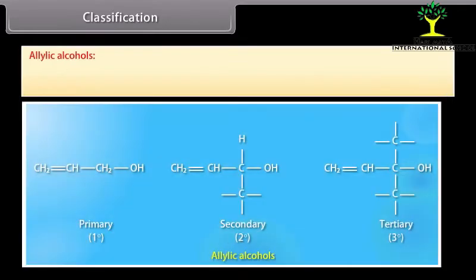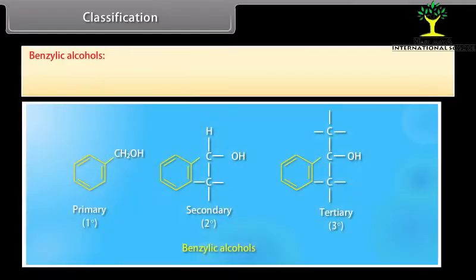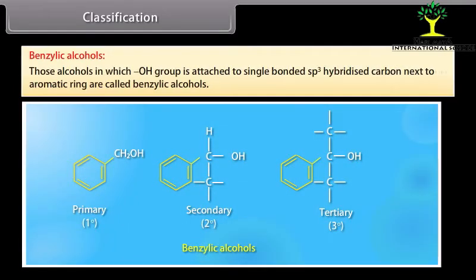Allylic alcohols: those alcohols in which the hydroxyl group is attached to a single-bonded sp3 hybridized carbon next to a carbon-carbon double bond, that is to an allylic carbon, are called allylic alcohols. Benzylic alcohols: those alcohols in which the hydroxyl group is attached to a single-bonded sp3 hybridized carbon next to an aromatic ring are called benzylic alcohols.